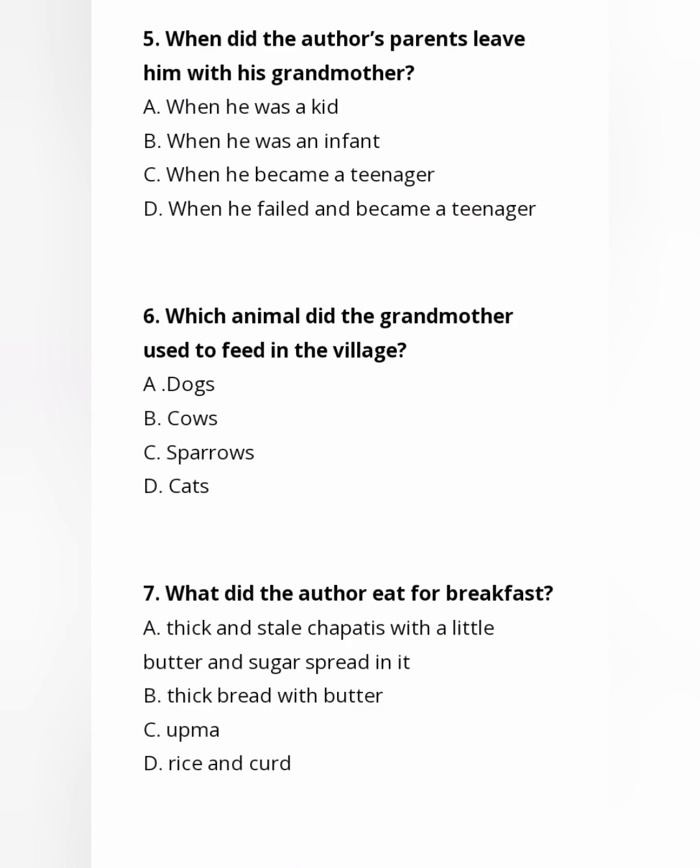Question 5: When did the author's parents leave him with his grandmother? Option A — when he was a kid. The sixth question: Which animal did the grandmother use to feed in the village? Option A — dogs. In the village she used to feed dogs, and in the city she used to feed sparrows.